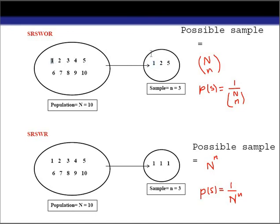So what happens after unit 1 is selected randomly from the population into the sample at the first draw? After selecting that unit at the first draw, that unit is not going to be considered in the population at the second draw. The size of the population is 10, but since we are not considering that selected unit at the second draw, the size of the population at the second draw becomes 9.